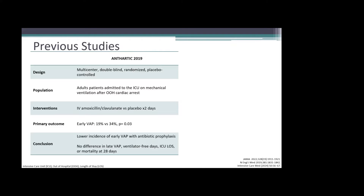The first study, done in 2019, was the ANTHARTIC trial — prevention of early ventilator-associated pneumonia after cardiac arrest. It was a multi-centered, double-blind, randomized, placebo-controlled trial looking at adult patients admitted to the ICU who were ventilated after an out-of-hospital cardiac arrest. It compared IV amoxicillin-clavulanate versus placebo for two days, and the primary outcome was the incidence of early VAP.